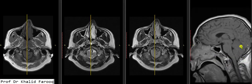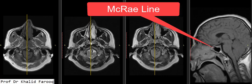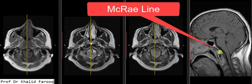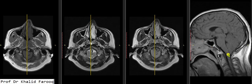On sagittal images, this is the anterior lip of the foramen magnum and this one is the posterior lip. We can see that the cerebellar tonsils are noted below this line, and we can also see that there is mild downward herniation of the cervicomedullary junction through the foramen magnum as well.